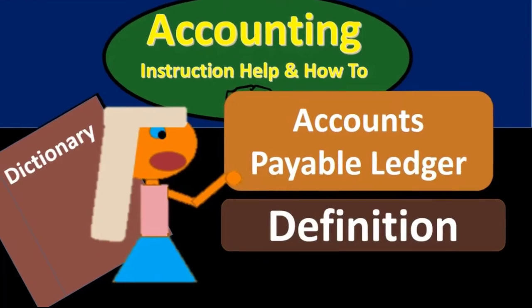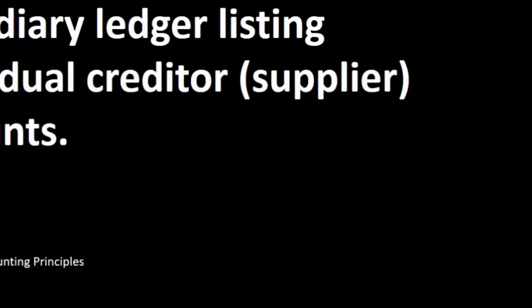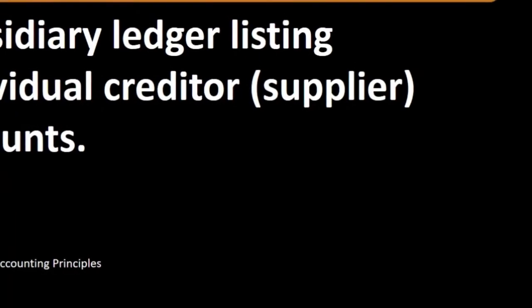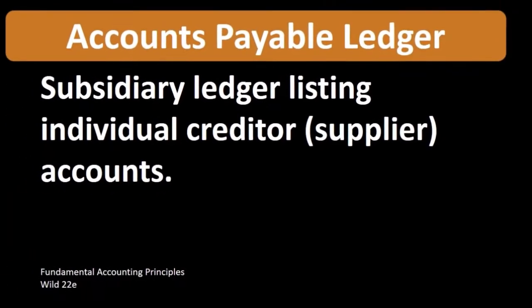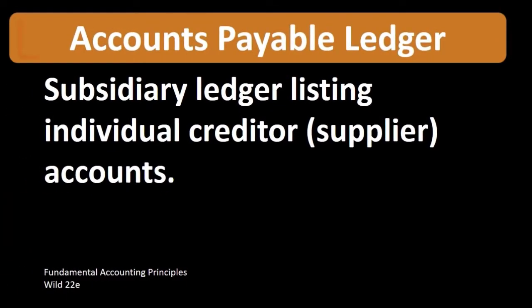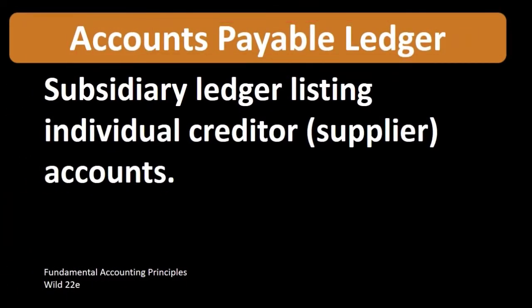Hello. In this lecture we will define accounts payable ledger. According to Fundamental Accounting Principles, 22nd edition, the definition of accounts payable ledger is: a subsidiary ledger listing individual creditor and supplier accounts.